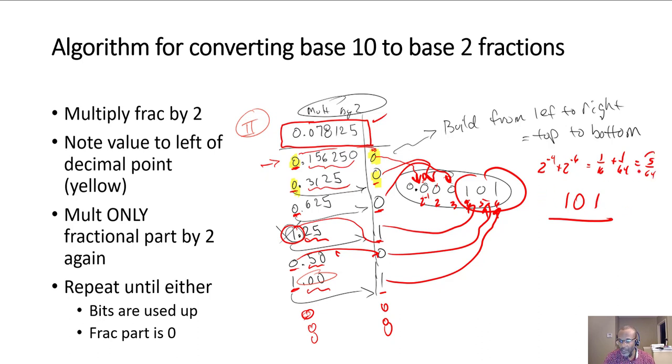So that's the value, 0.078125 is 5/64ths. Also, note that we have a 5 here.